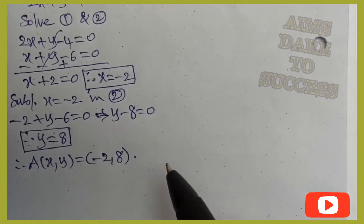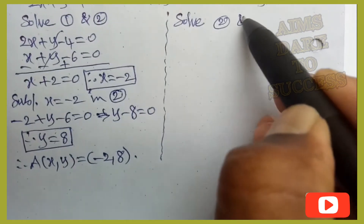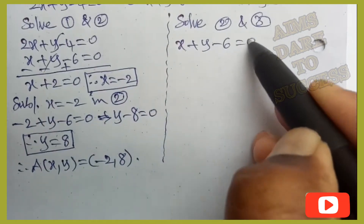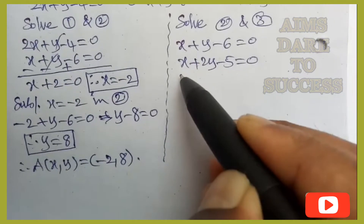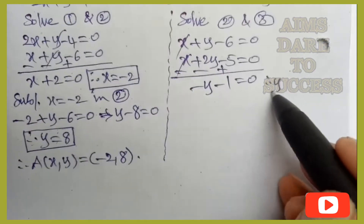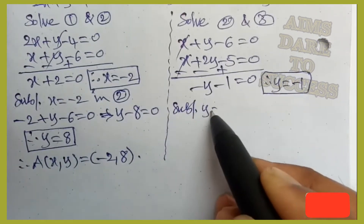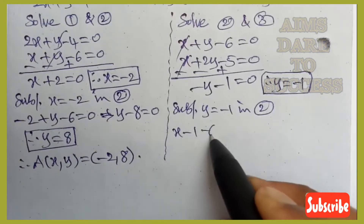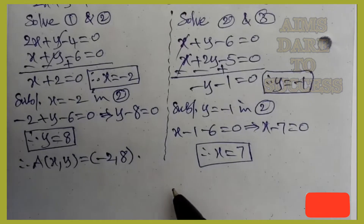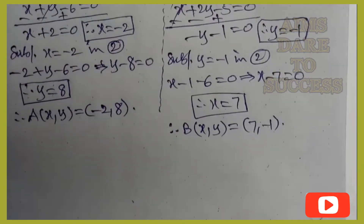Next, solving equations 2 and 3: equation 2 is x+y−6=0, equation 3 is x+2y−5=0. Subtracting gives −y+1=0, so y=−1. Substituting y=−1 into equation 2: x−1−6=0, so x=7. Therefore point B is (7, −1).